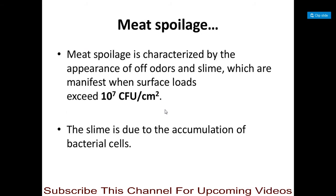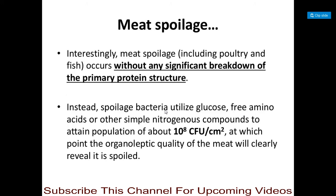Meat spoilage is characterized by the appearance of odors and slime, which manifest when surface loads exceed 10⁷ colony forming units per square centimeter. The slime is due to the accumulation of bacterial cells on the surface of that meat or meat product.